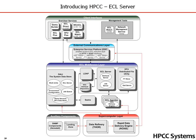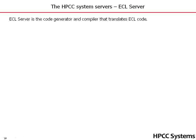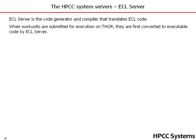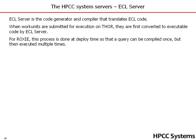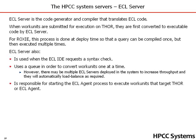The next middleware component we want to look at is the ECL server. The ECL server is the code generator and compiler that translates ECL code. When work units are submitted for execution on Thor, they are first converted to executable code by the ECL server. For Roxy, this process is done at deployment time, so that a query can be compiled only once but then executed multiple times. The ECL server is also used when the ECL IDE requests a syntax check, and it uses a queue to convert work units one at a time. However, there may be multiple ECL servers deployed to increase throughput, and they will automatically load balance as required. The ECL server is also responsible for starting the ECL agent process to execute work units that target Thor or the ECL agent.